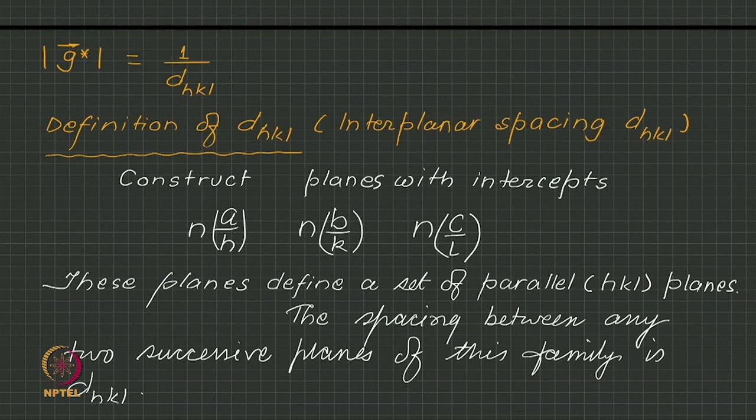These are three lengths that vary as you vary n. For n=1, the intercepts are a/h, b/k, and c/l, defining one plane. The next plane for n=2 has intercepts 2a/h, 2b/k, 2c/l; for n=3, intercepts 3a/h, 3b/k, 3c/l. So you let n vary over all integers.